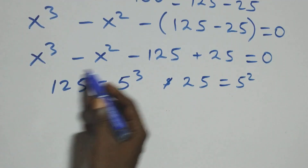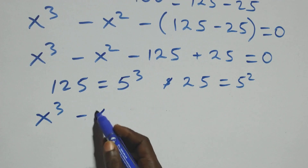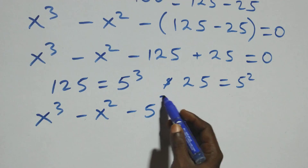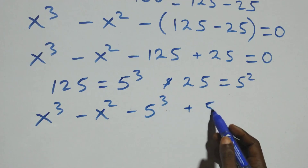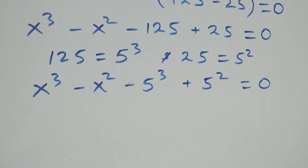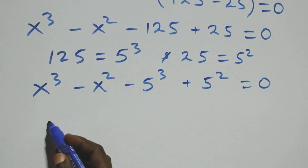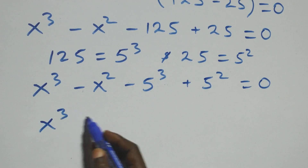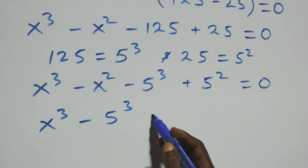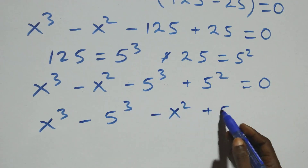We can now write this equation as x cubed minus x squared minus 5 cubed plus 5 squared equals zero. Then we bring things together by grouping: x cubed minus 5 cubed, then minus x squared plus 5 squared, equals zero.